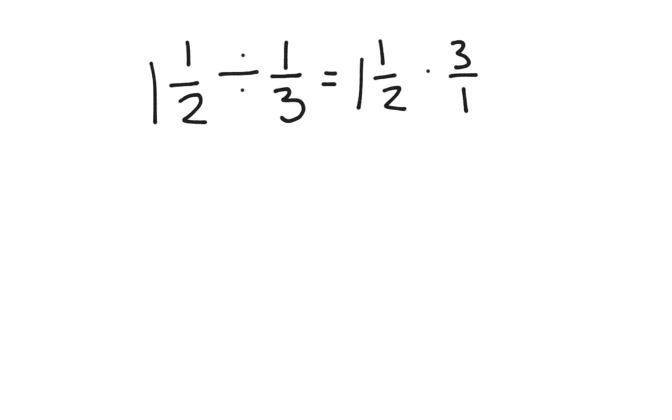I also need to change my mixed number into an improper fraction. So I see that I have one whole. I can write one whole as 2 over 2. Plus one half gives me 3 over 2, or 3 halves.